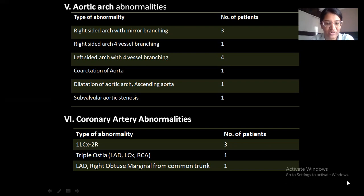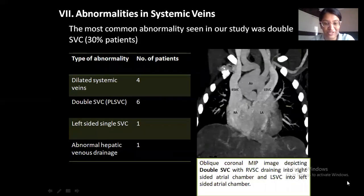Coming to coronary artery abnormalities: the most common type of abnormality seen was the single LCX-2R pattern, followed by triple ostia in one patient and common origin of the LAD and the right obtuse marginal artery in one patient.